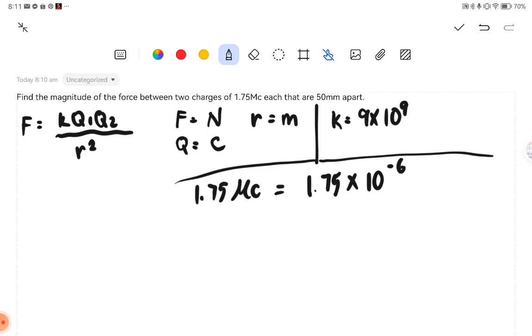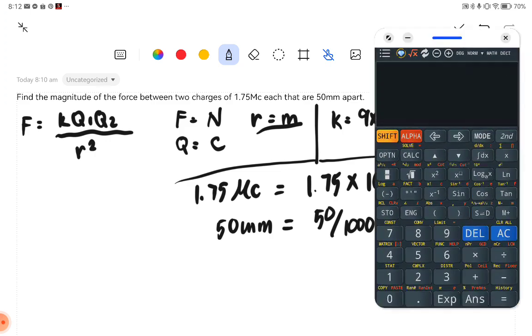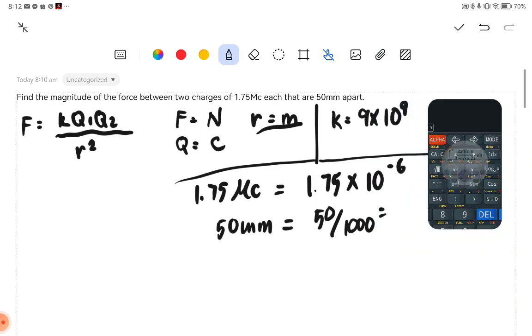Also, since our R should be in meter, we should convert 50mm to meter. So we could just simply divide 50 divided by 1,000, we will have 0.05.